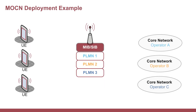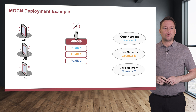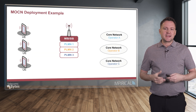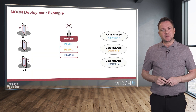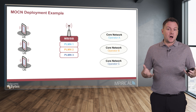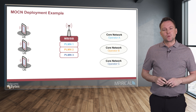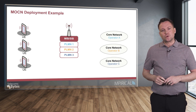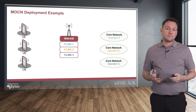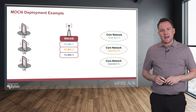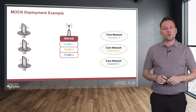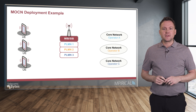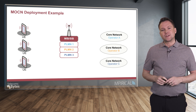One of the ways that we can deploy neutral host network infrastructure is using something known as MOCN — Multi-Operator Core Network — which is a method standardized by the 3GPP. There are additional architectures we can use to deploy shared and neutral host networks, such as Gateway Core Network and MORAN, Multiple Operator Radio Access Network, and they all share the same common principle of allowing the sharing of radio infrastructure.